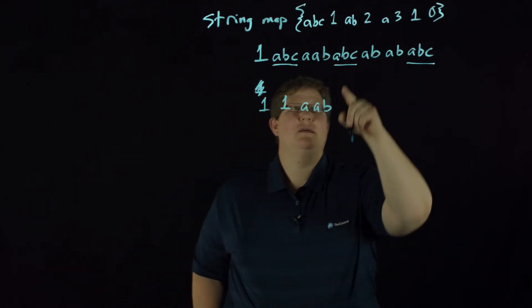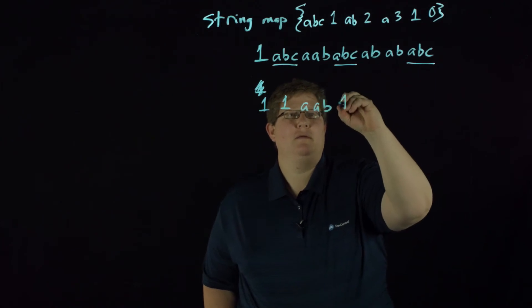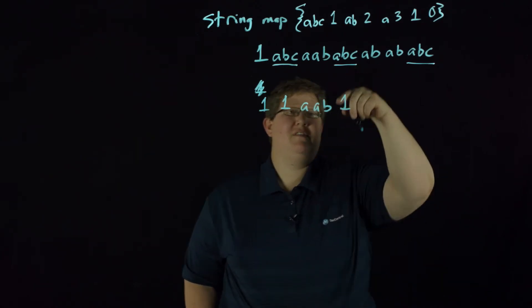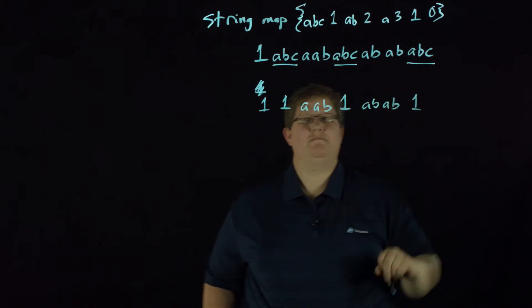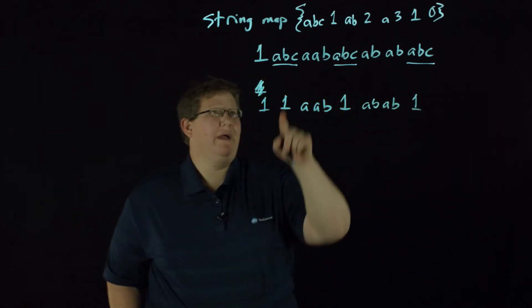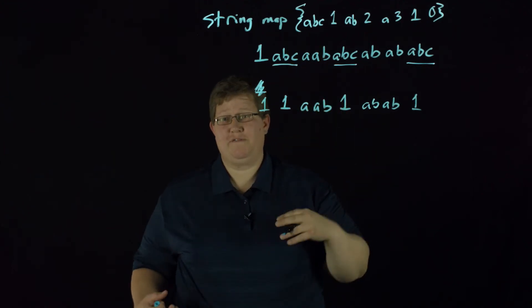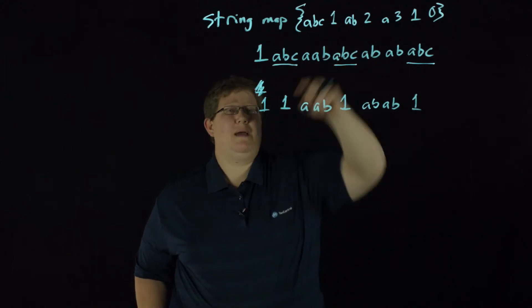We still have A AB, and ABC maps to one, and then we have AB AB one. Okay, so that was our first mapping, that's our first way through.